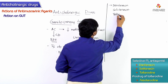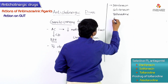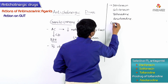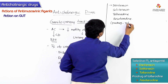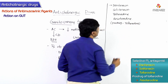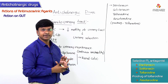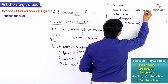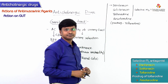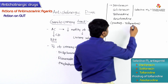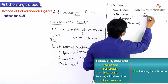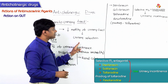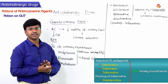Fesoterodine is a prodrug of tolterodine. These drugs — darifenacin, solifenacin, tolterodine, and fesoterodine — have selective M3 antagonistic activity and are useful in the treatment of urinary incontinence because they cause urinary retention.